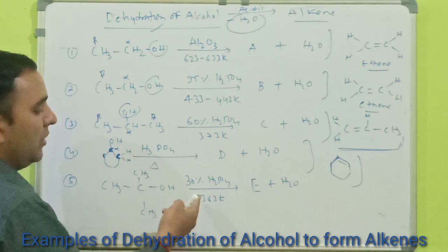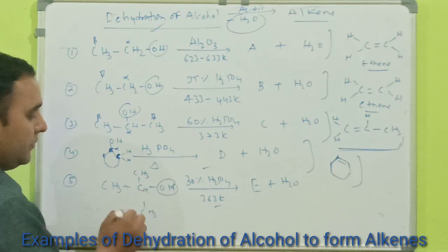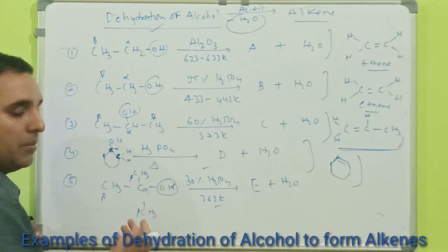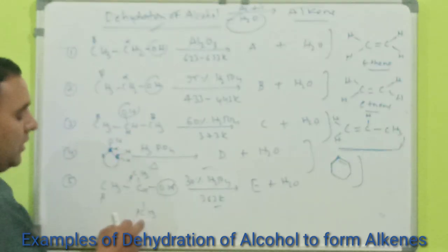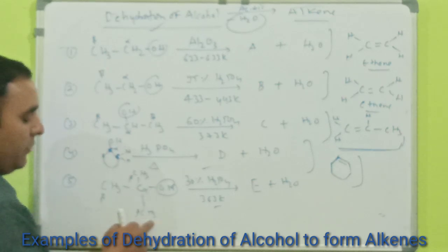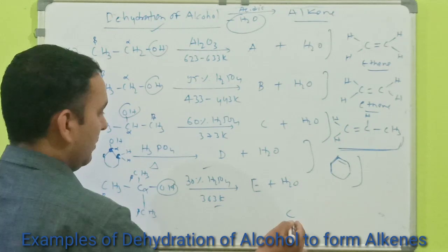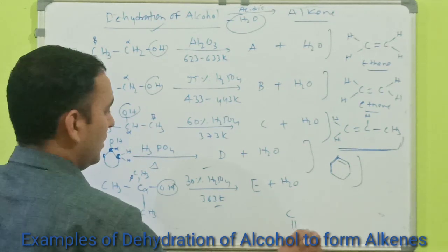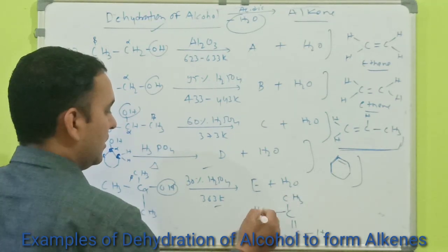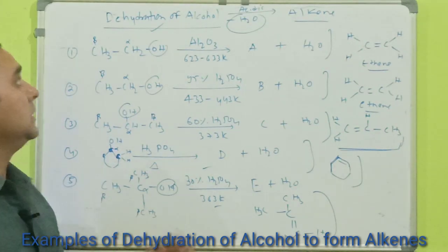In the fifth reaction, the same dehydration conditions apply — acid and heat are present. The OH group is on the alpha carbon; the surrounding carbons are all beta carbons. I consider one beta carbon: the OH is removed from the alpha carbon and one hydrogen from that beta carbon. The product is 2-methylpropene (CH₂=C(CH₃)₂).